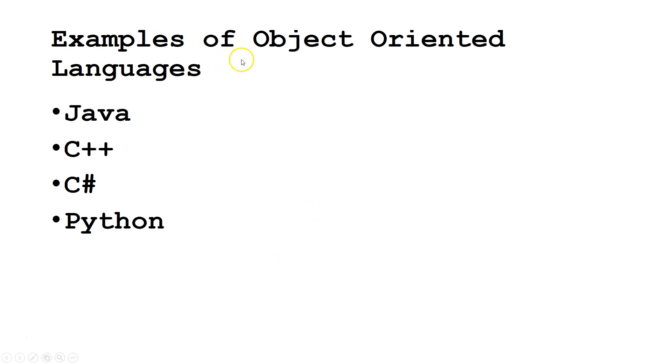Okay, so examples of languages that use an object-oriented paradigm: Java, C++, C Sharp, and Python. There's many more, but these are four major ones.